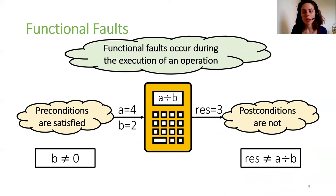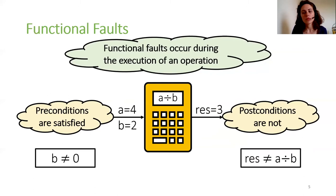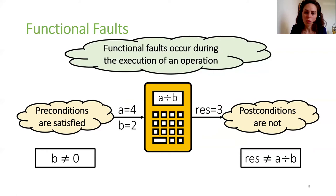A functional fault occurs during the execution of an operation. Although the operation's preconditions are satisfied, its postconditions are not. In this simple example, our object is a calculator and the operation divides a by b. The only precondition for this operation is that b is different from zero. While this precondition indeed holds as b equals two, the operation's output is three, which is false. Meaning the operation's postcondition, according to which the output must be equal to the division result, does not hold.